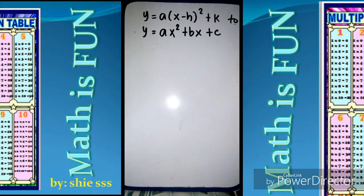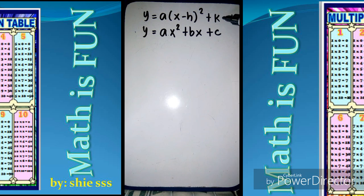Our lesson for today is about transforming a quadratic function into the form y equals a times the quantity of x minus h squared plus k. This is what we call the vertex form. And then we're going to transform it to general form, which is y equals ax squared plus bx plus c.